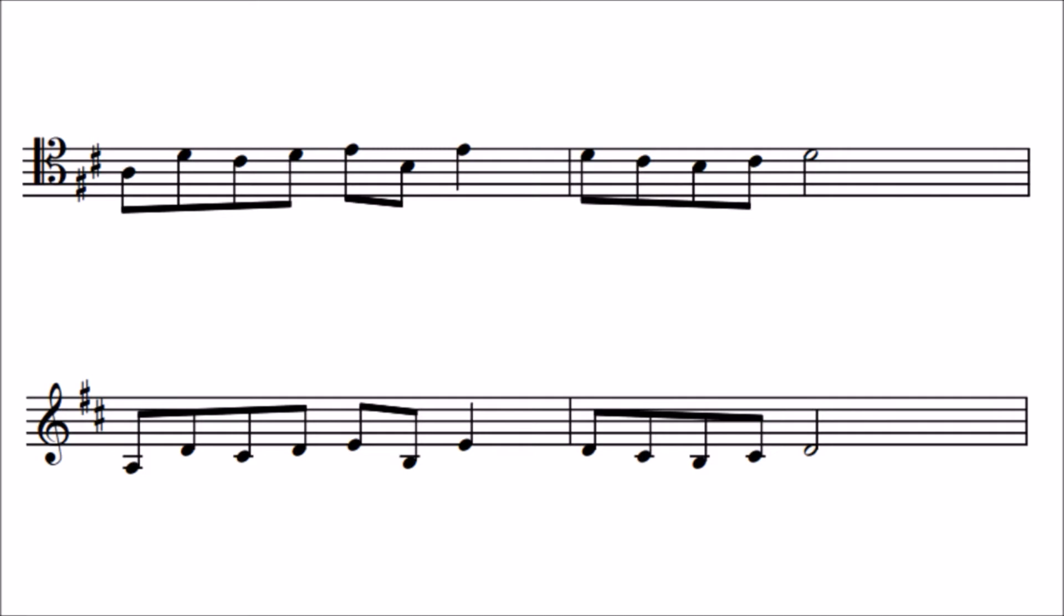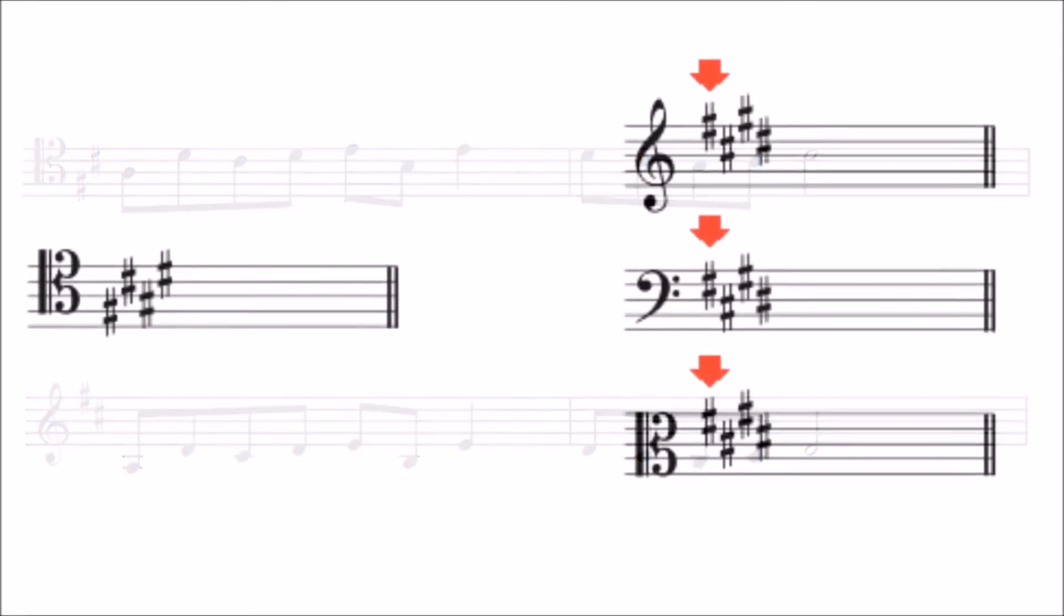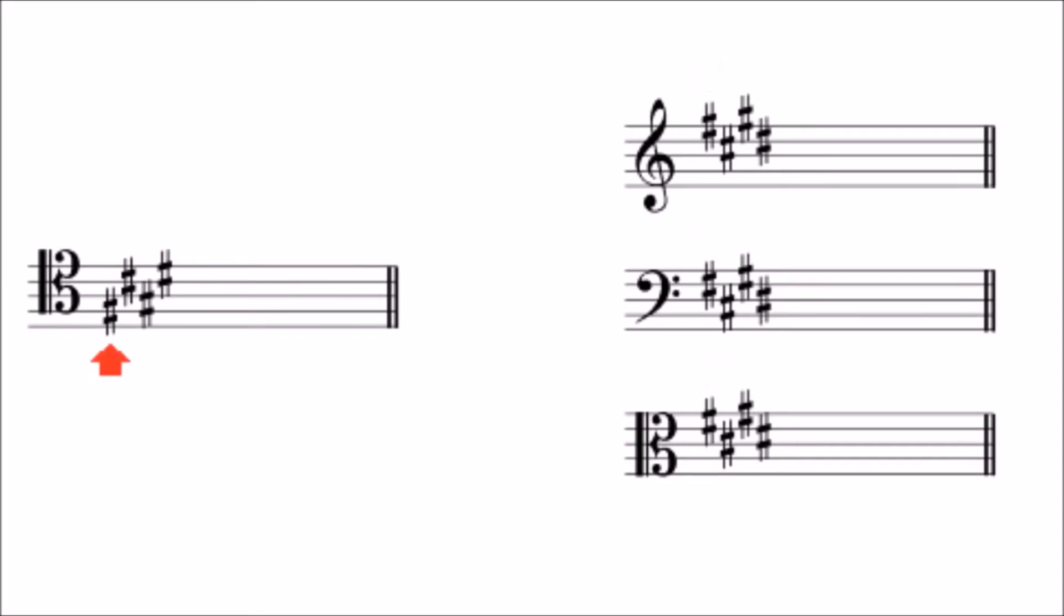The other thing to notice carefully here is the position of the sharps. For all the other clefs - treble, bass, and alto - the sharps start off with a higher, lower, higher, lower pattern. But for the tenor clef, it starts with the first sharp in a lower position.